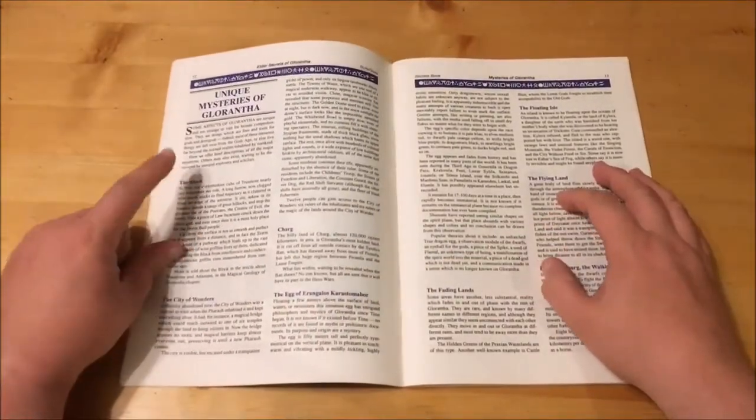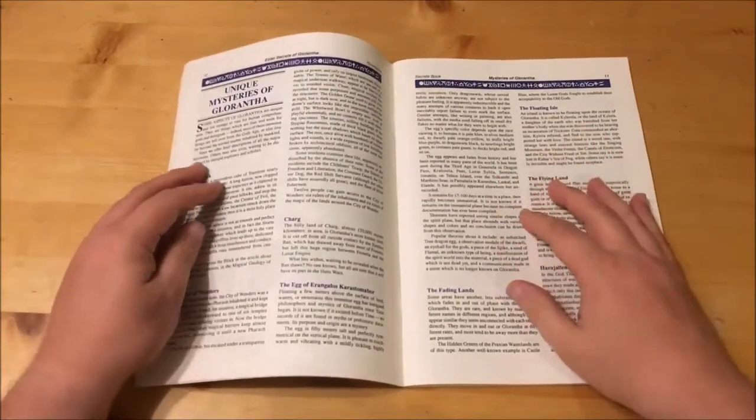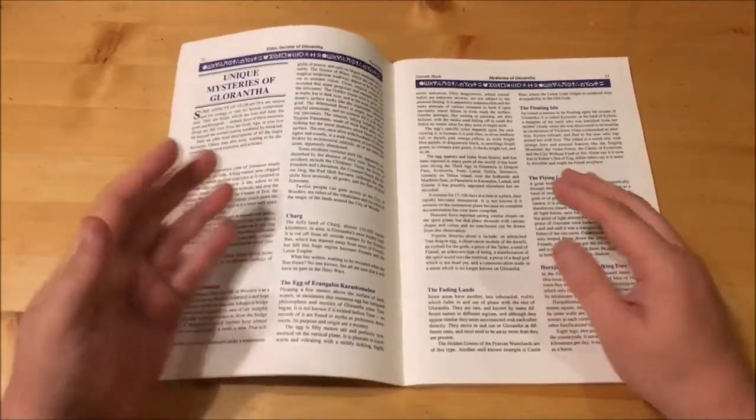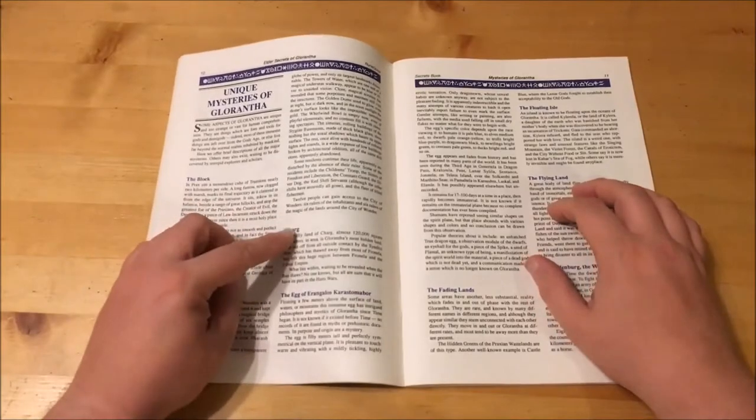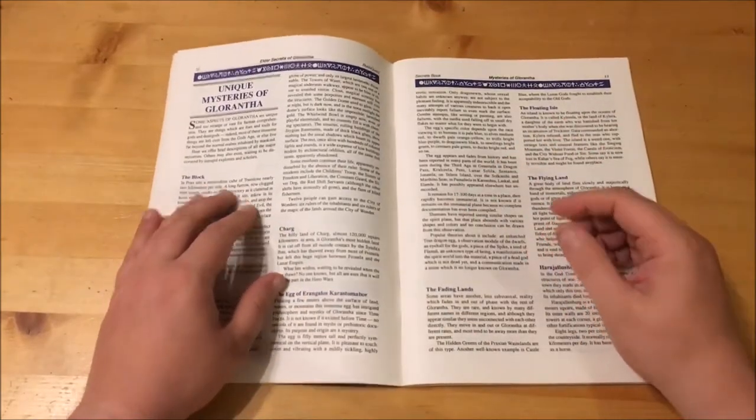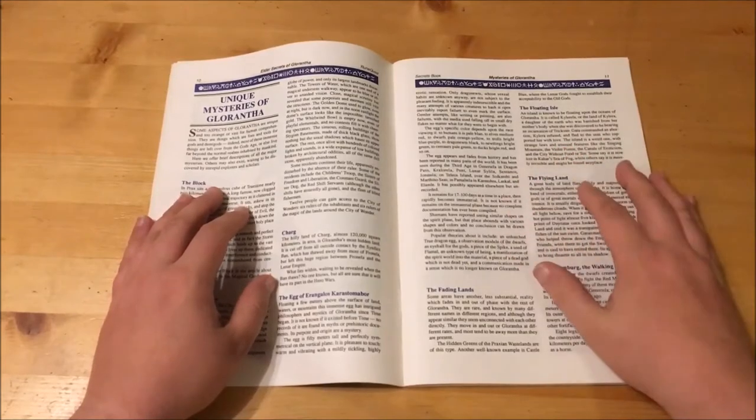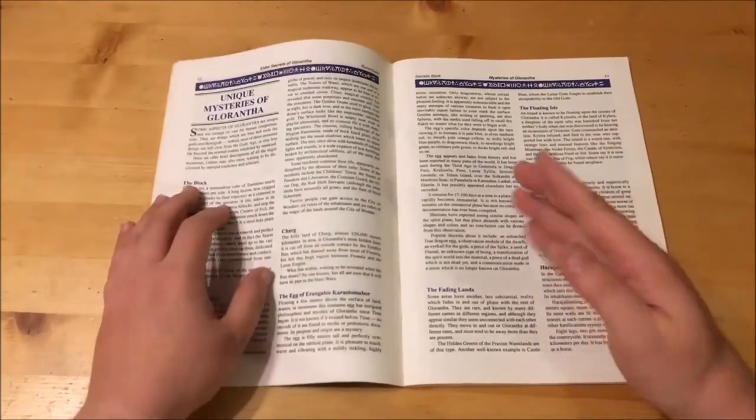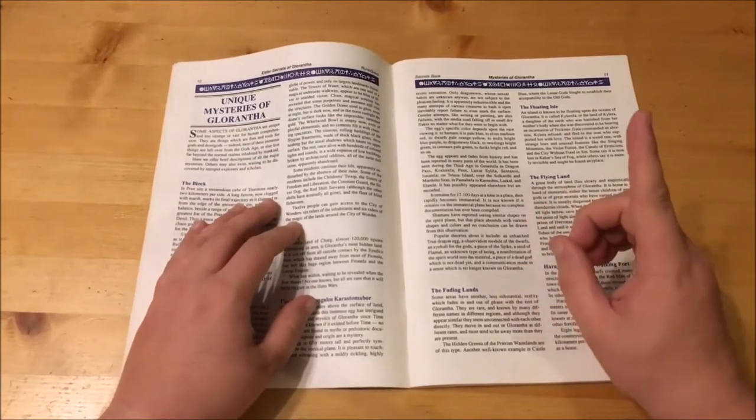Next up is Unique Mysteries of Glorantha. First up is The Block, the two kilometer tall block of true stone that struck down Wackboth during god time and the most holy place for worshippers of Stormbull. The top of the block is populated by a family of wise griffins who defend it. We have the City of Wonders, an abandoned city surrounded by an impenetrable dome that keeps people out. The city is only accessible by twelve people in all of Glorantha. Next is Charg, a land cut off by the Syndix Ban, a curse which sealed the land. We have the Egg of Arangelos Karastomabor, a fifty meter tall floating egg of unknown purpose. The egg has a different color depending on the race viewing it and seems to appear at various places in the world at random.